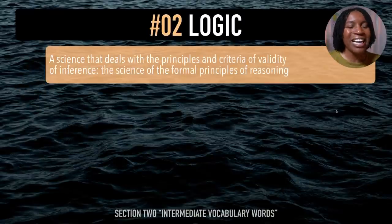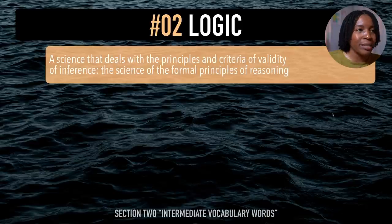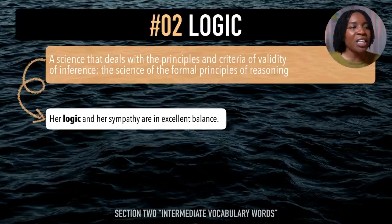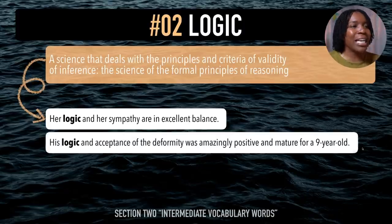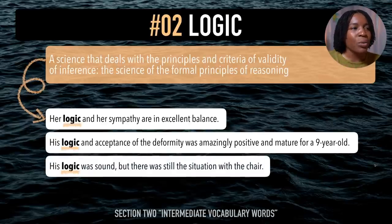The next intermediate vocabulary word is 'logic'. You hear that 'juh' in the middle. After me — logic. This means a science that deals with the principles and criteria of validity of inference, or the science of the formal principles of reasoning. Example sentences: Her logic and her sympathy are in excellent balance. His logic and acceptance of the deformity was amazingly positive for a nine-year-old. His logic was sound, but there was still the situation with the chair. Last time — logic.